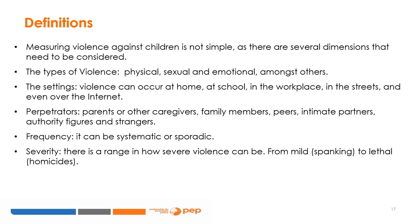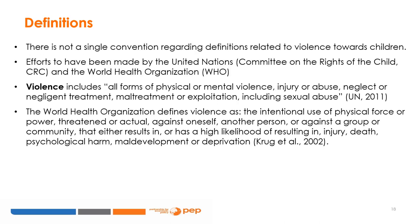Third, the perpetrator can vary — it can be a parent or any caregiver, a family member, a peer, an intimate partner, an authority figure, or a stranger. Fourth, violence varies in its frequency — it can be systematic or sporadic. Finally, there are levels of severity, ranging from mild forms such as yelling or spanking, to more severe forms such as hitting or even lethal levels. In terms of a formal definition, there is no single definition, although the United Nations — in particular the Committee on the Rights of the Child and the World Health Organization — have made efforts to establish one.